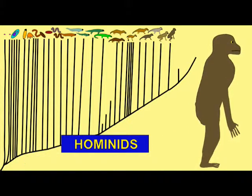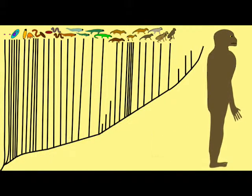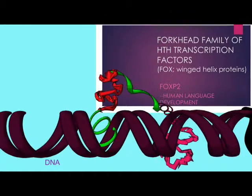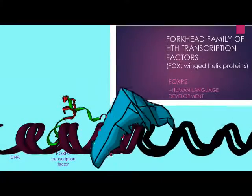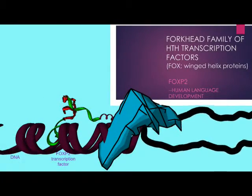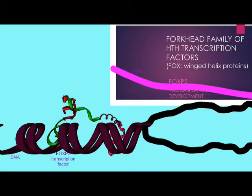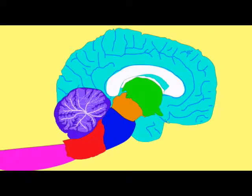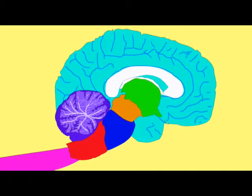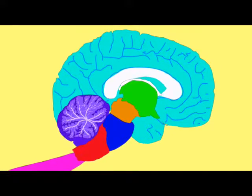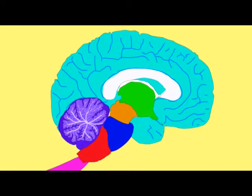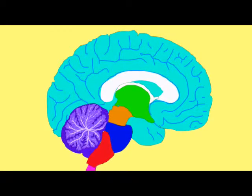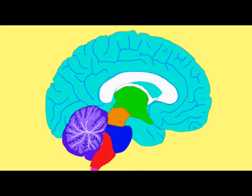One of the Forkhead transcription factors, FOX-P2, may have had a critical role in the evolution of human language. There is a two-amino acid difference between the protein in humans and in chimps, and mutations in this gene cause language deficits. It is thought that changes in this protein were critical in early hominid evolution. Neanderthals share a version of this gene comparable to that of modern humans.